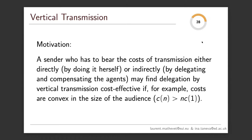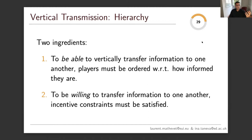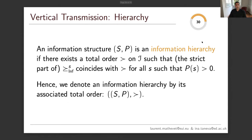We capture vertical transmission through the concept of a hierarchy, which has two ingredients. An information structure S_P is an information hierarchy if players are totally ordered with respect to how informed they are — using the strongest notion of 'more informed.' There is literally a total ranking of players, allowing them to deliver information to one another in sequence. The fact that they are able to do so doesn't mean they are willing, which motivates the next condition.